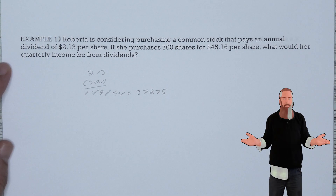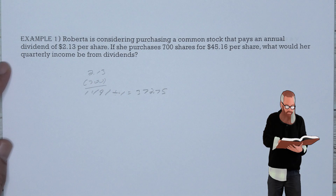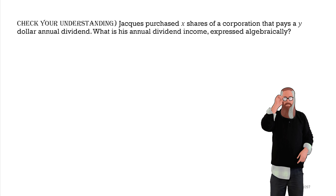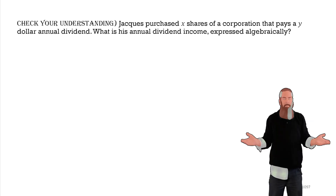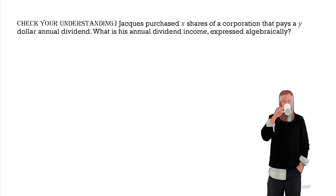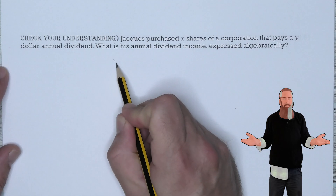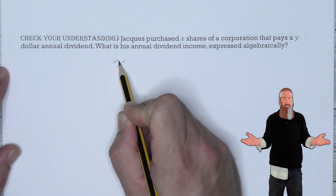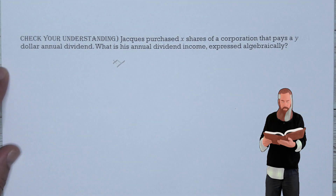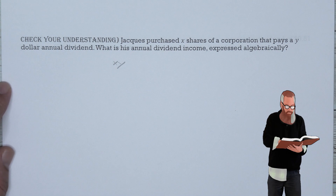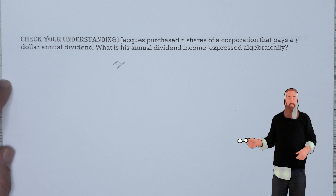So Roberta should receive $372.75 as her quarterly dividend payment. Let's check our understanding. Jacques purchased X shares of a corporation that pays Y dollars annual dividend. What is the annual dividend income expressed algebraically? If they have X shares and receive a dividend of Y dollars per share, then X times Y gives the annual dividend income. If paying quarterly, divide that by four to find the quarterly check.